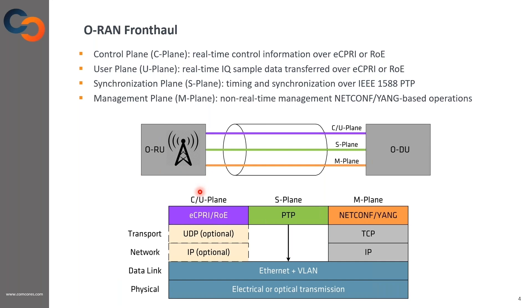The control, user, synchronization, and management planes are encapsulated over Ethernet. The control, user, and synchronization planes are done directly over Ethernet, while the management plane uses TCP and IP. The control and user planes can also be transported over UDP and IP, but this is optional for some cases.